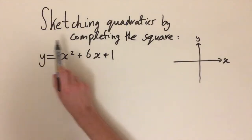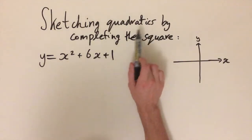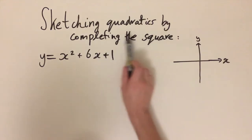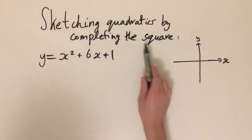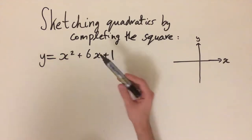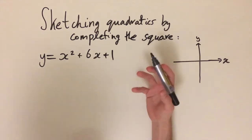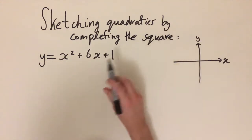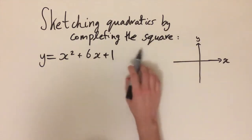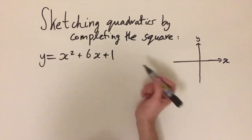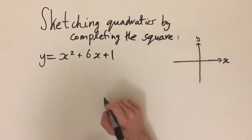In this video we're going to be sketching quadratic functions using the completed the square form. This is going to allow us to find the maximum and minimum of quadratic functions — it's going to be a very powerful tool — and we can also use it to help us find the x-intercepts and the y-intercepts.